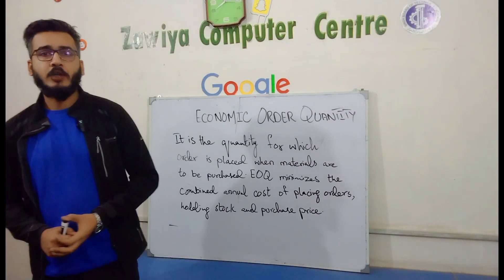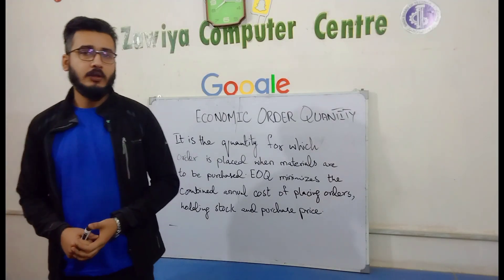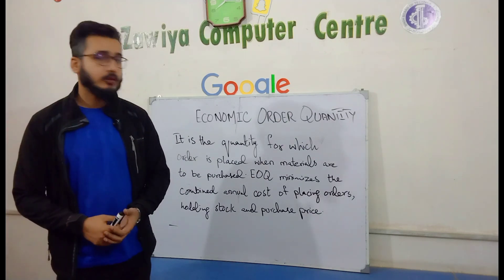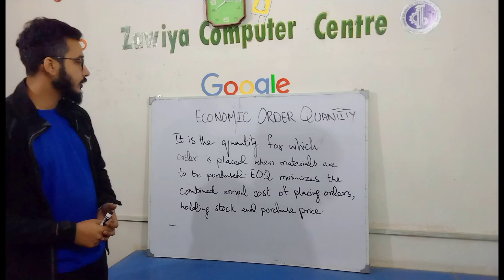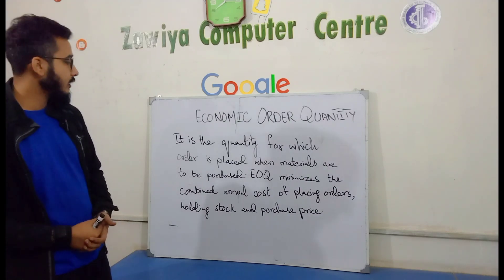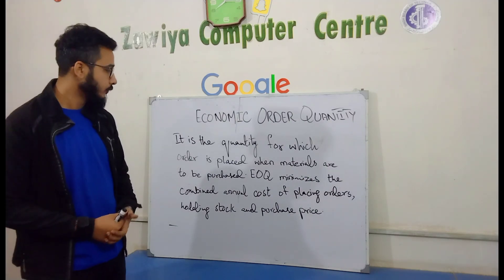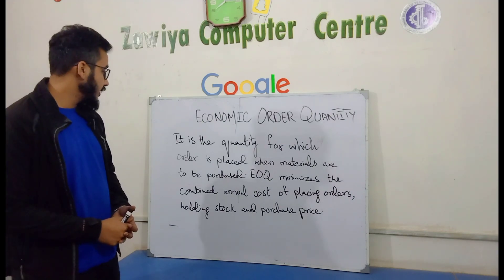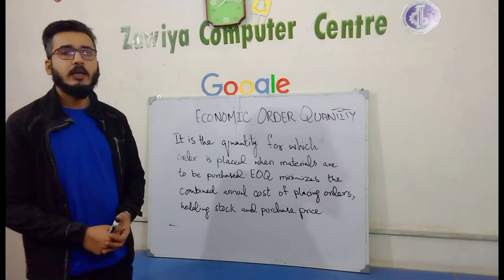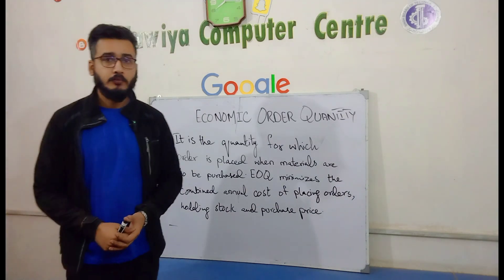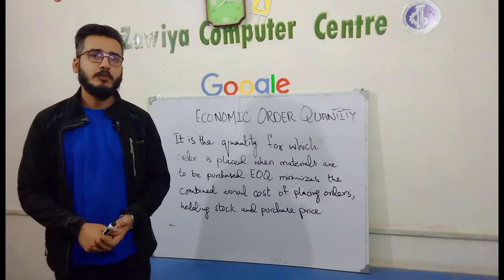Welcome to House of Farmers. Hope you all are doing well. In today's video we are going to learn about Economic Order Quantity. Economic Order Quantity is the quantity for which an order is placed when materials are to be purchased. It minimizes the combined annual cost of placing orders, holding stock, and purchase price — telling us how much material should be ordered.